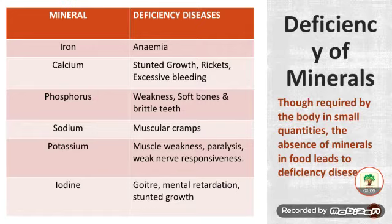Looking at the mineral deficiency table: if your body is not getting the required amount of iron, you may suffer from anemia. Next is calcium, which leads to stunted growth, rickets, or excessive bleeding — if you get a wound it doesn't stop. Next is phosphorus, which may cause weakness, soft bones, and brittle teeth.